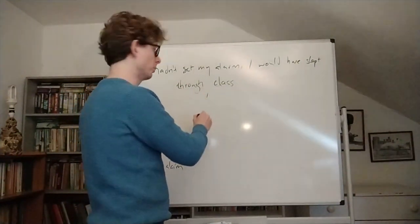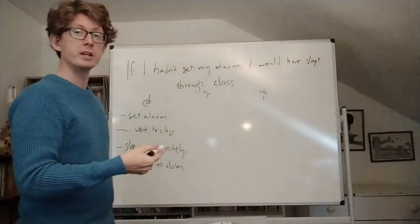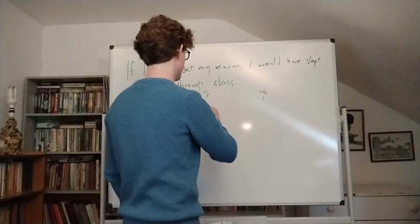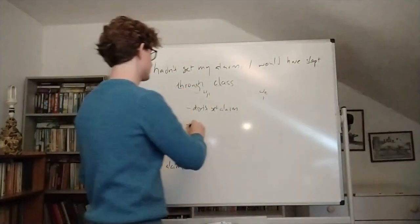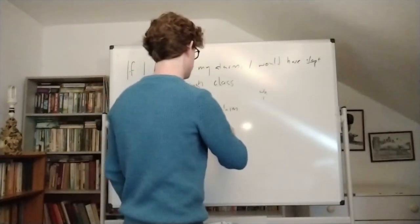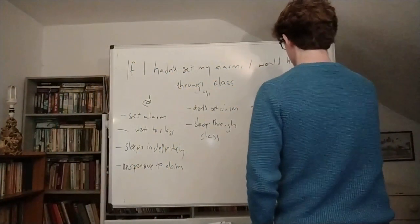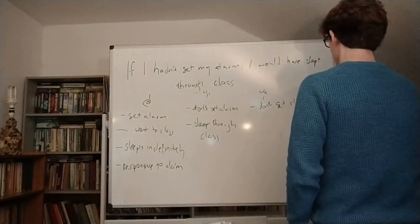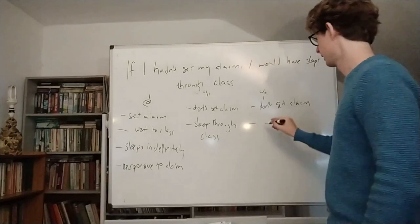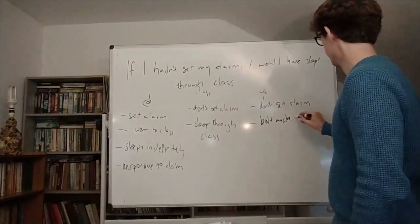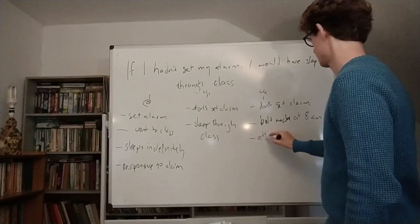Now we're going to think about two other possible worlds — world one and world two — and they're both going to be worlds where I don't set my alarm, but different things follow. In world one, I don't set my alarm, and as a result I just sleep through class. World two is a little different: I fail to set my alarm, but for some reason I just sit bolt upright awake at 8am, and for that reason I attend class.